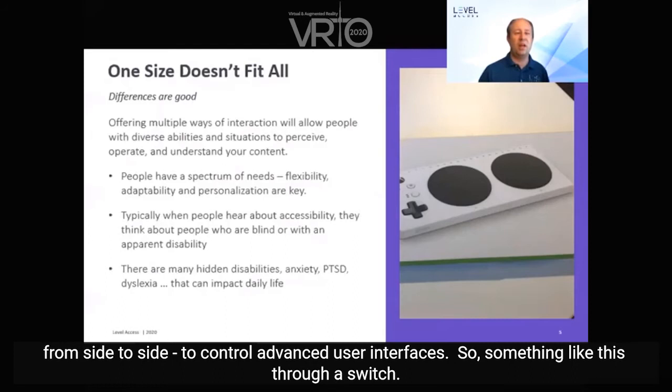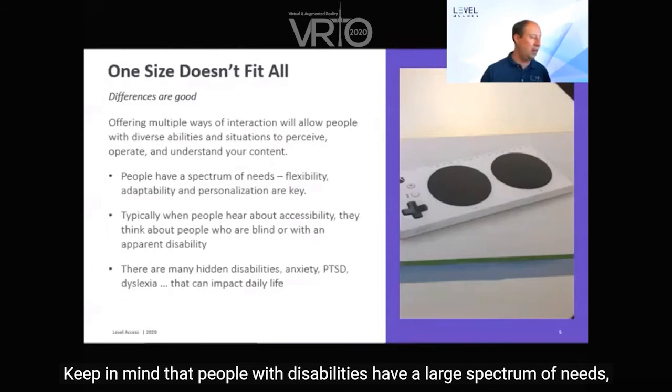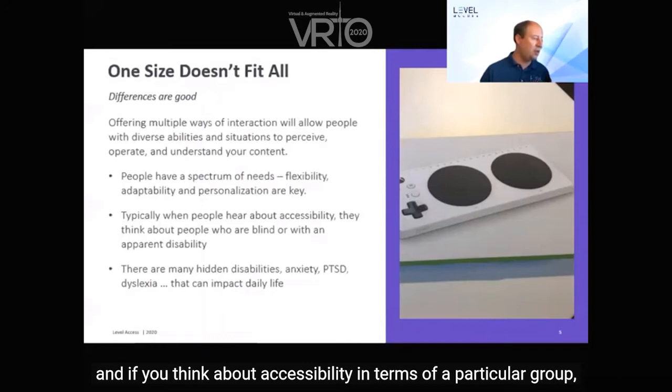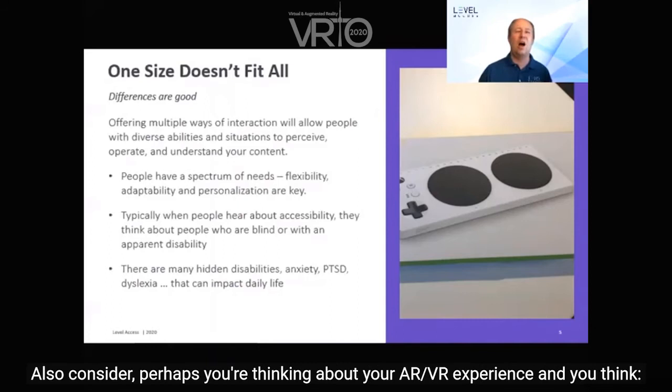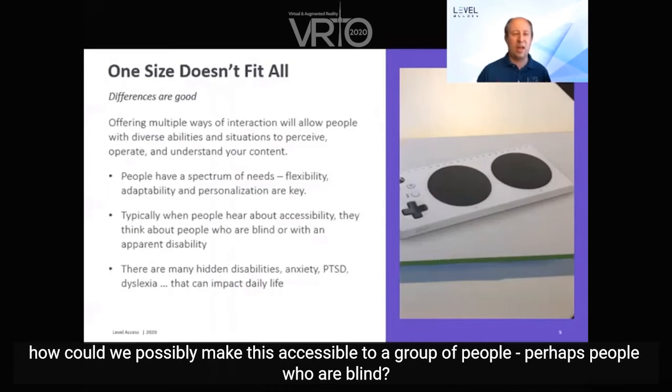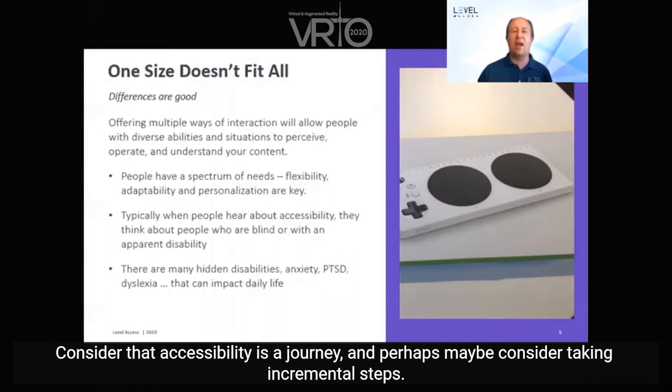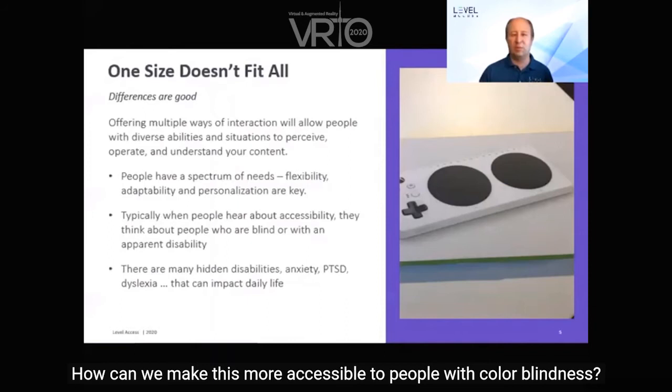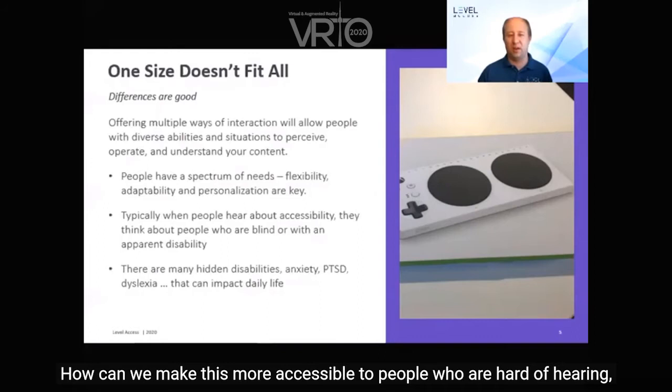Keep in mind that people with disabilities have a large spectrum of needs, and if you think about accessibility in terms of a particular group, you're likely missing the mark. Many people with disabilities have hidden disabilities. Consider that accessibility is a journey — perhaps take incremental steps. How can we make this more accessible to people with color blindness, people who are hard of hearing, or a person who uses a wheelchair? Start thinking from there.